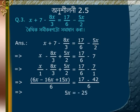Dividing both sides by 5 gives x is equal to minus 5. That is the answer.